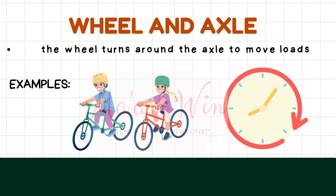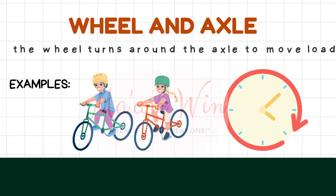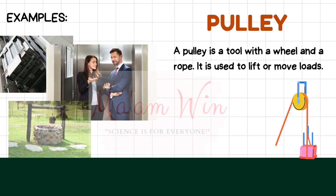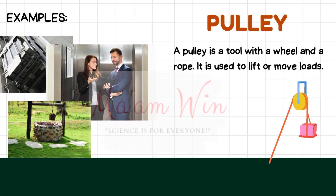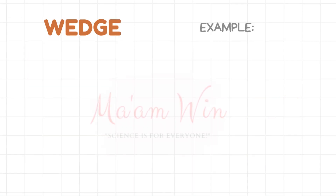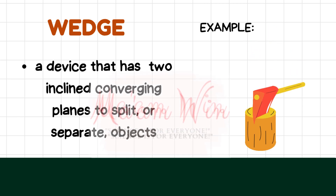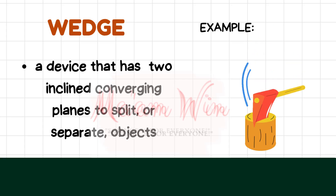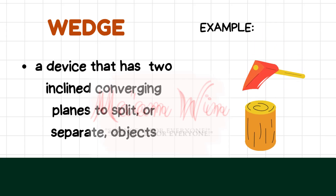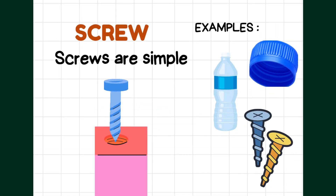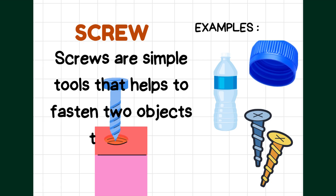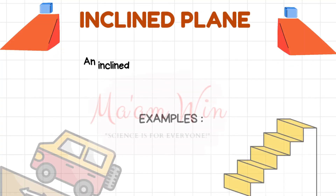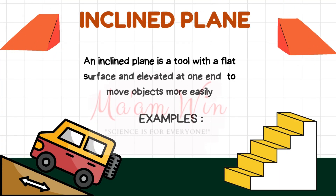Wheel and axle: the wheel turns around the axle to move loads. Example: bicycle and clap. Pulley is a tool with a wheel and a rope used to lift or move loads. Example: elevator. Next, we have the wedge — a device that has two inclined converging planes to split or separate objects. We also have the screw — a simple tool that helps to fasten two objects together. And lastly, the inclined plane — a tool with a flat surface elevated at one end to move objects more easily.